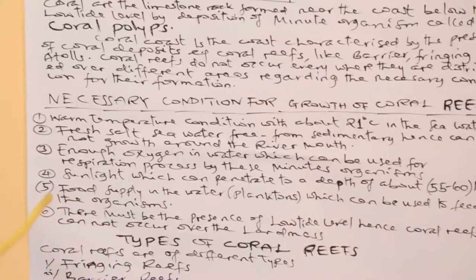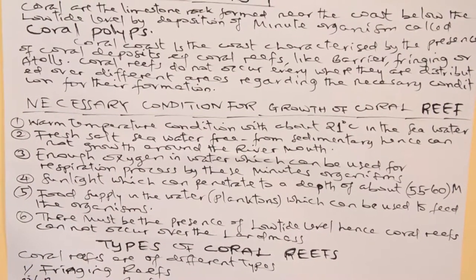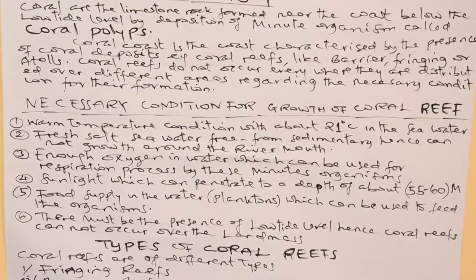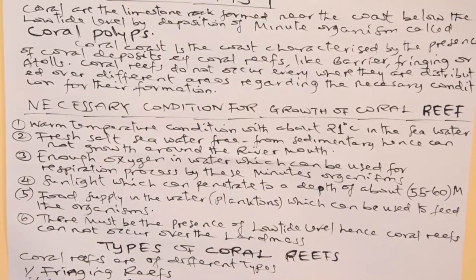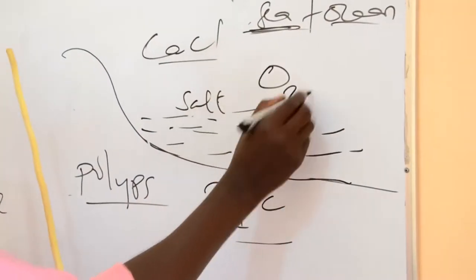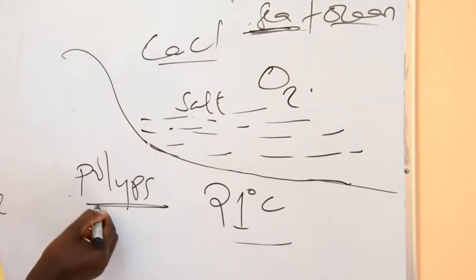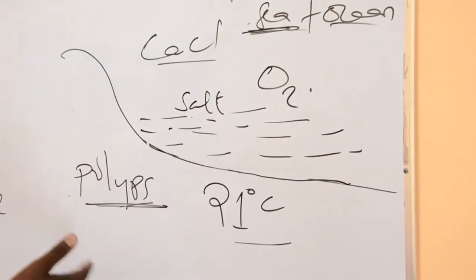Another condition for the growth of coral reefs is enough oxygen. There is another condition for this organism to grow — oxygen. This is the air which is very essential to this organism, and wherever this oxygen is absent, even this organism can undergo death.